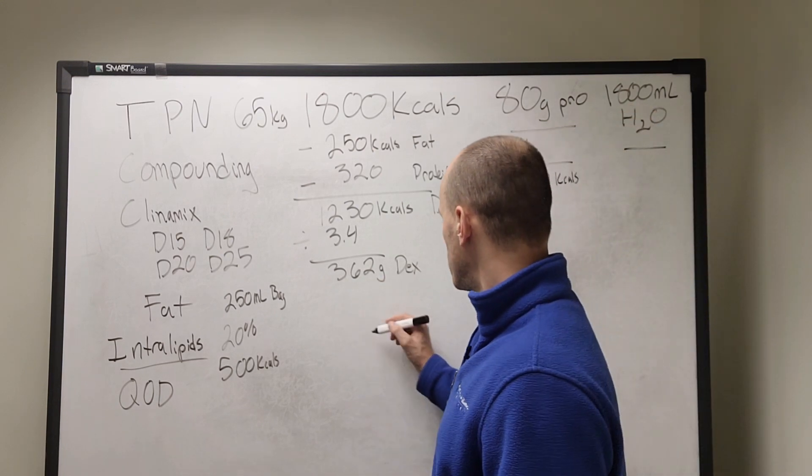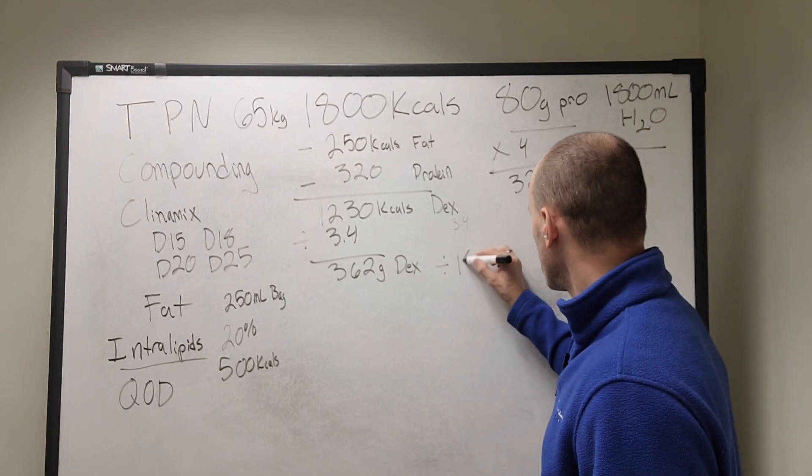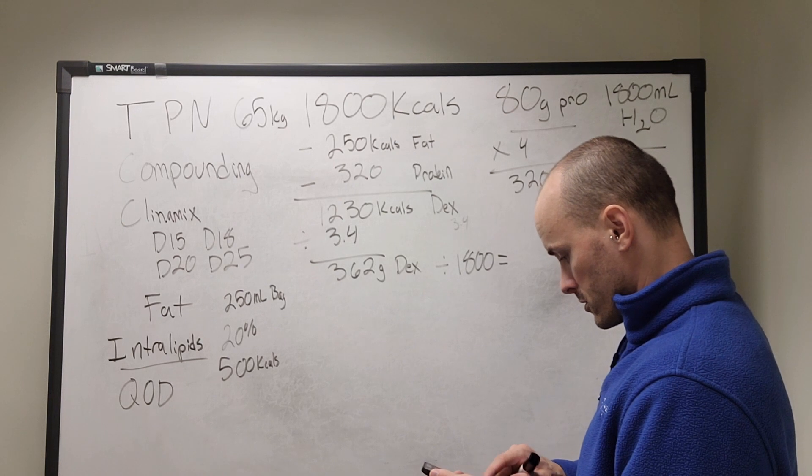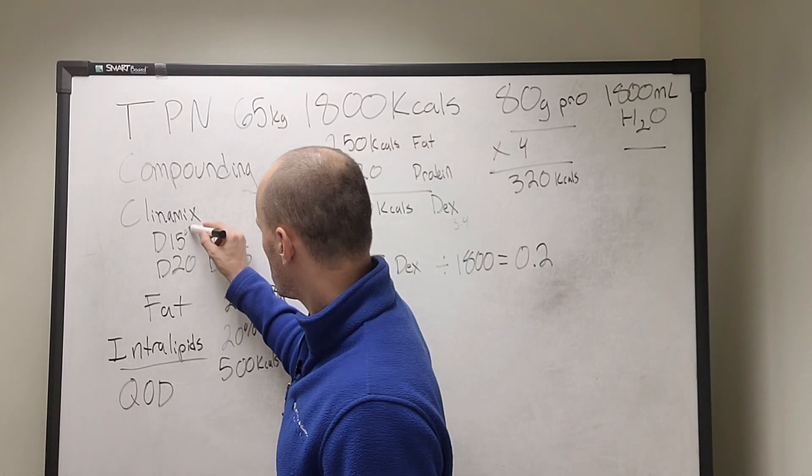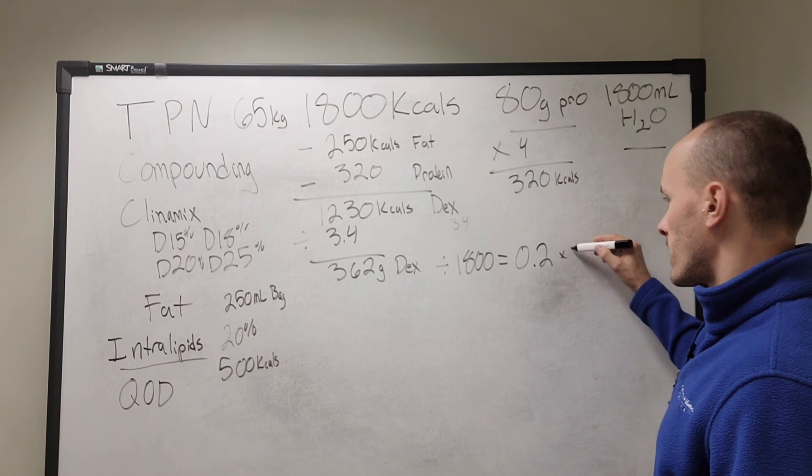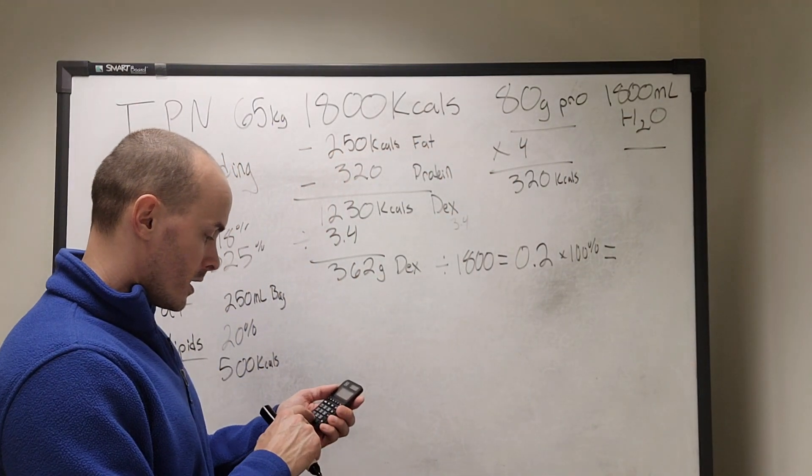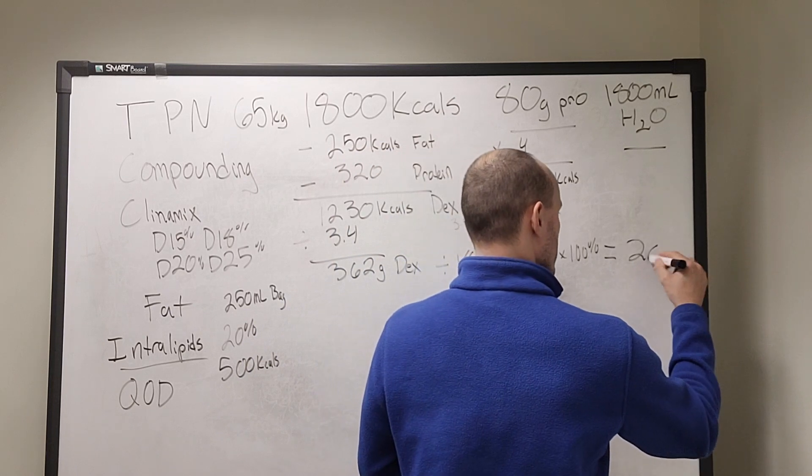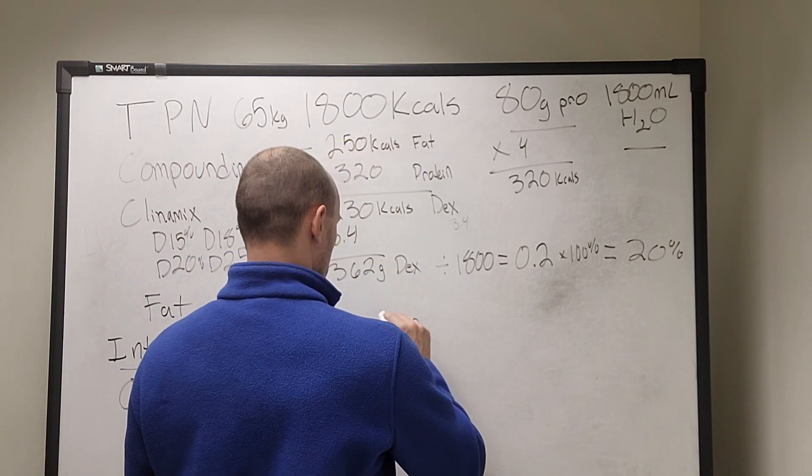So we can take this and you can divide by the amount of fluid that they need per day. So this person needs 1,800 mils. And this will give us 362 divided by 1,800 gives us 0.2. And then because these are all in percentages, it's a percent dextrose containing fluid, we're going to multiply this by 100%. This will give us the percent dextrose solution that we need. Times 100 gives us a 20% dextrose solution. So they can get D20.